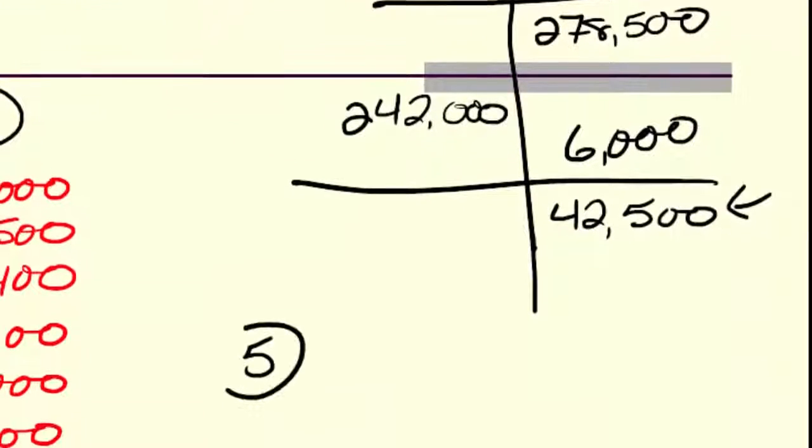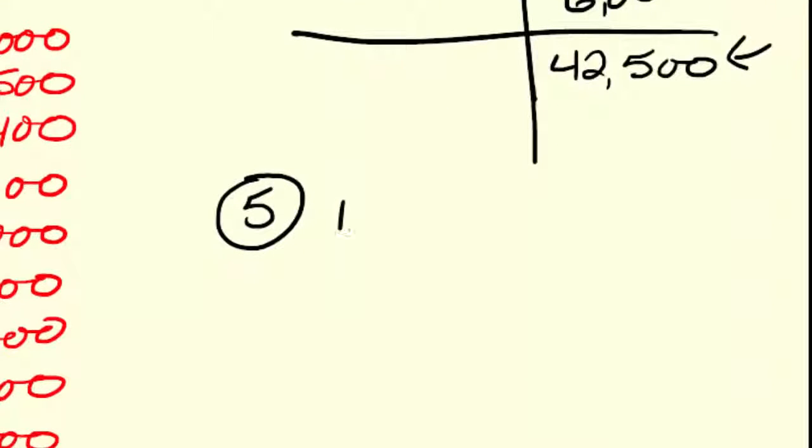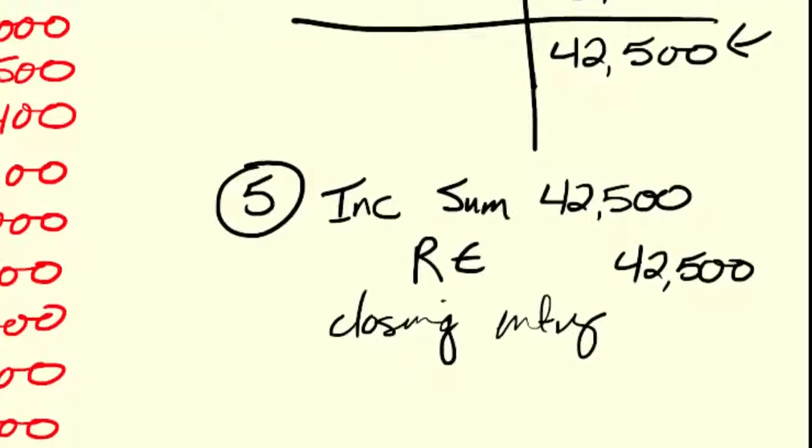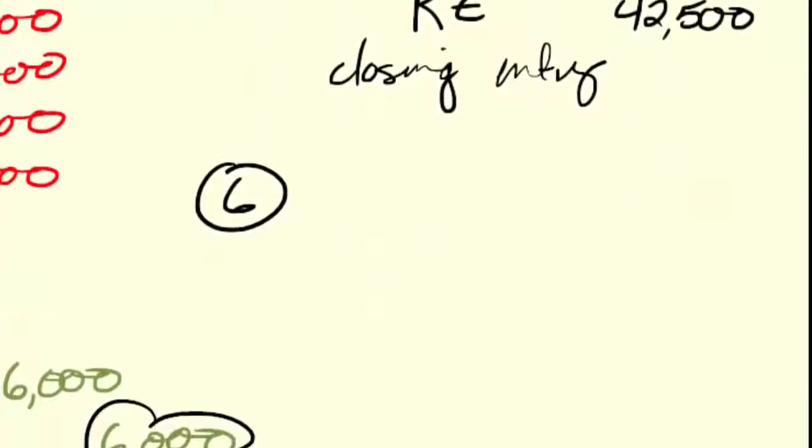Once I've done that, then I'm going to close income summary, so I'm going to debit income summary. By the way, if you had a loss, income summary would have come up with a debit, and when I closed it, it would debit retained earnings, which would drop equity. So I'm going to debit income summary, I had a gain here, I put it into retained earnings, and this is a closing entry.